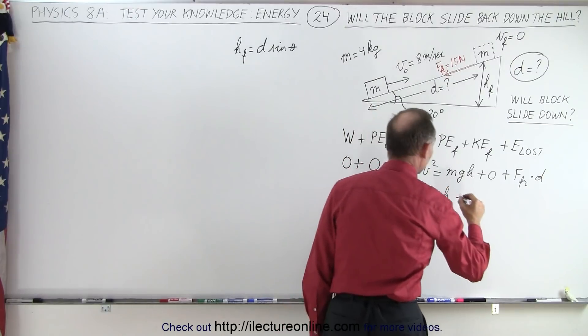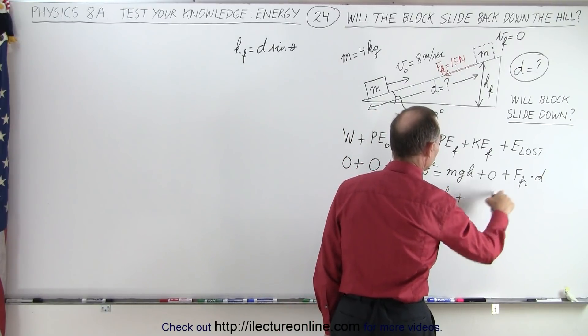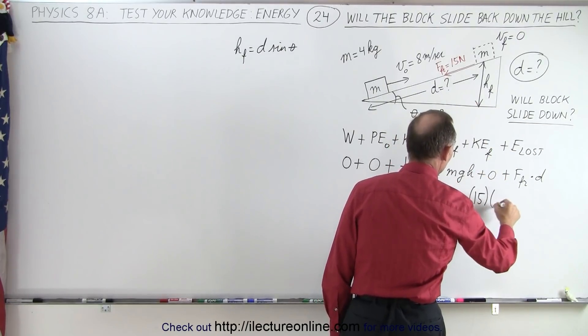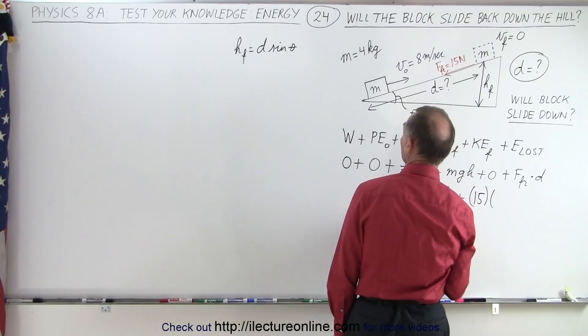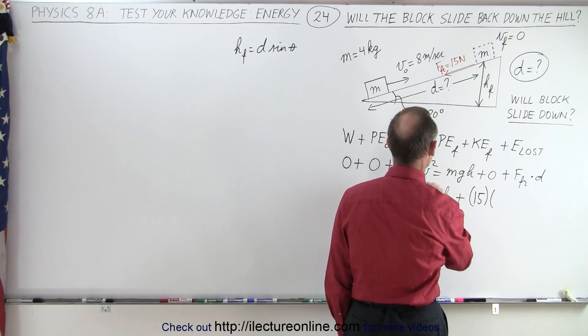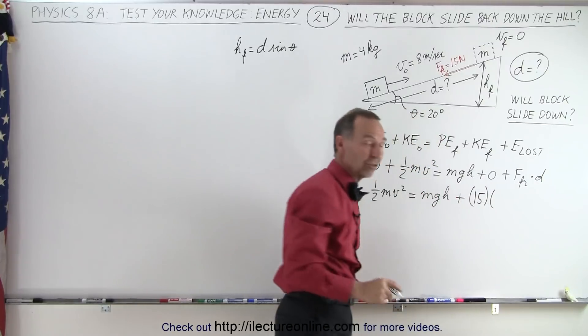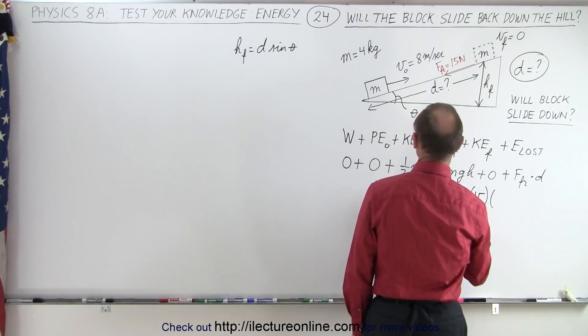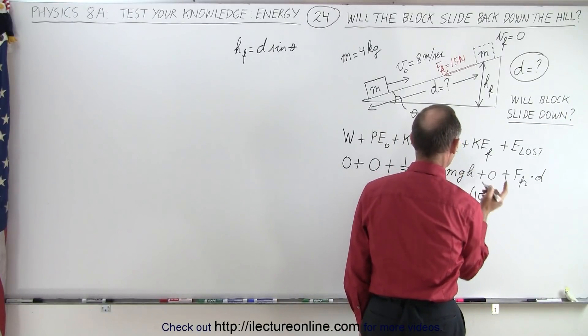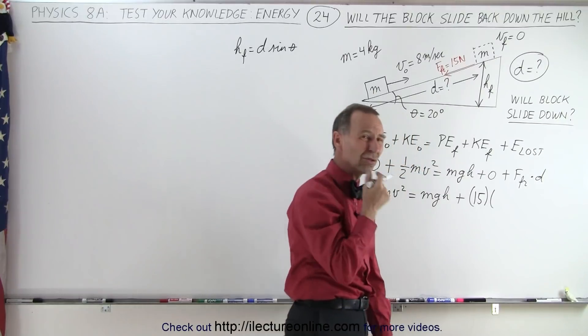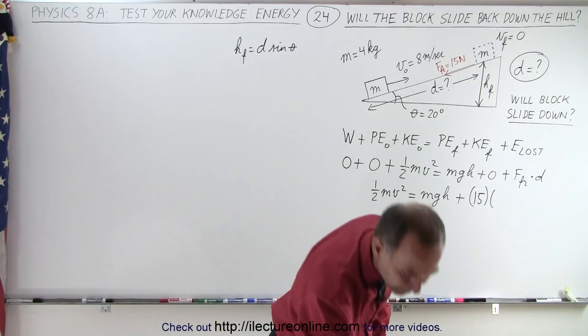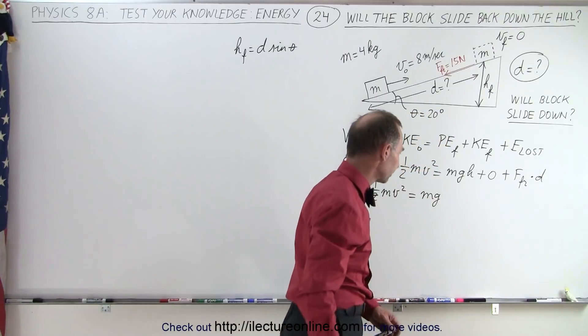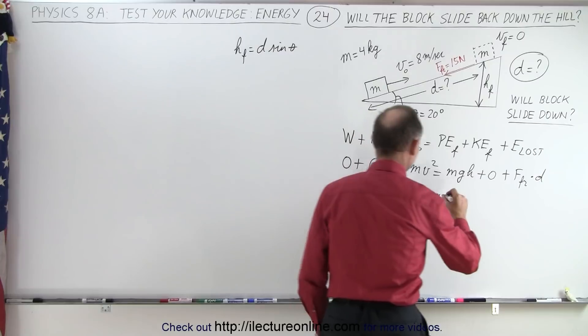So the friction force, let's see here, friction force would be 15 times the distance. Oh wait a minute, we're going to change the distance. We're going to write in terms of h because that way we'll solve for h. Or maybe we want to change this h to distance. Let's do that, that's probably better. Let's go ahead and instead of h, we'll write what h is equal to. That would be d sine theta.